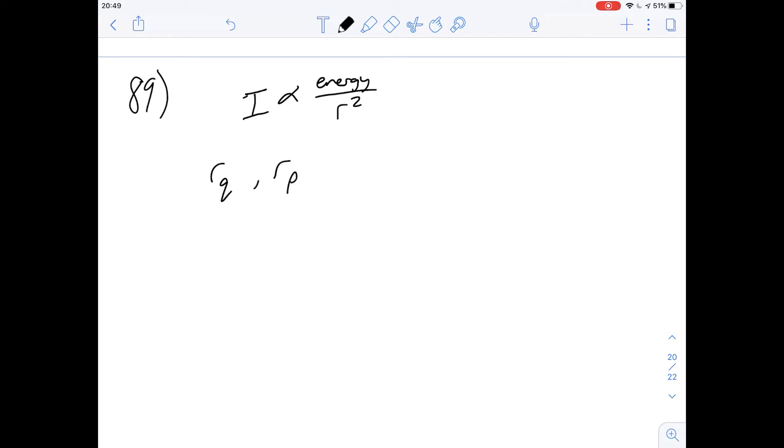So let's define two different things. RQ is going to be the radius of Q, and RP is going to be radius of P. So they both have this minimum intensity. So that's going to be the same for both of them.